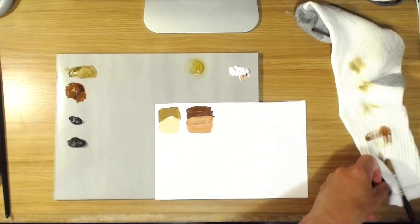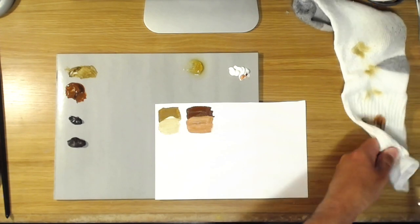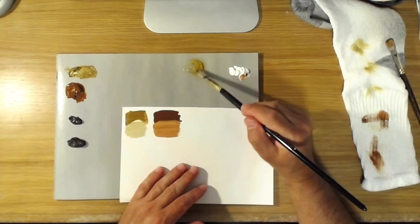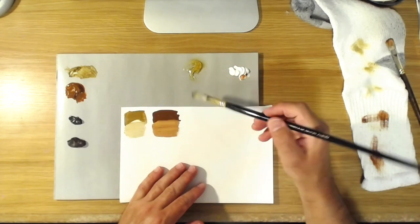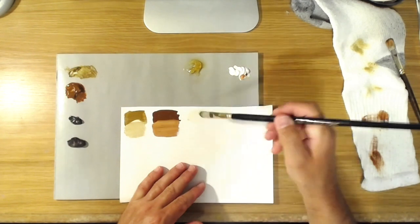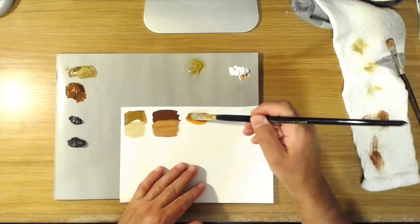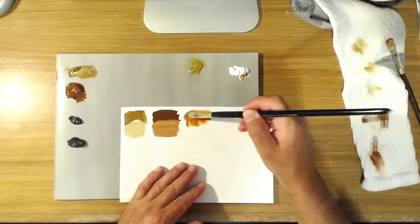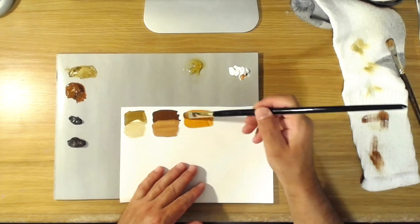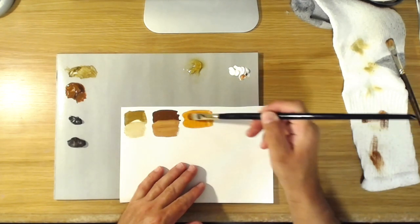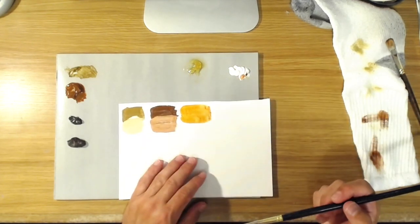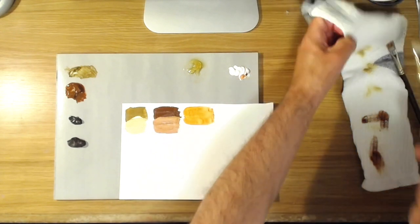So burnt sienna is a wonderful color to glaze with in oil paints because of that transparency, and it's got that really rich sort of fiery undertone. I just have a little glazing medium out here, so if I mix a little burnt sienna with that you'll see what a beautiful glazing color that makes. It's really bright and red and saturated. Burnt sienna is a great color to use if you're painting copper.